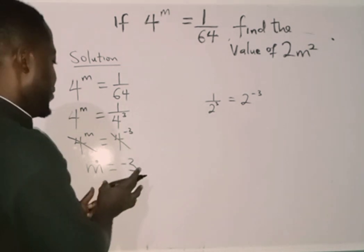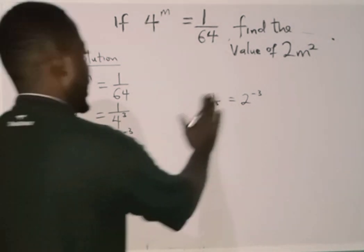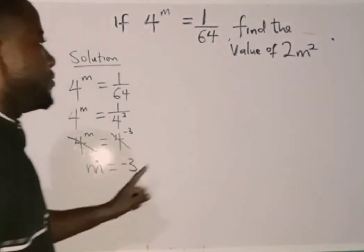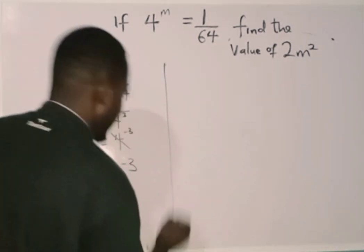Now that's the value of m. Don't forget, we are asked to find the value of 2m squared. So I'm going to substitute this value into 2m squared.